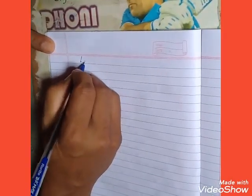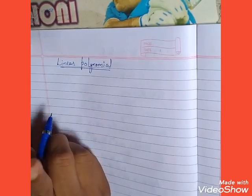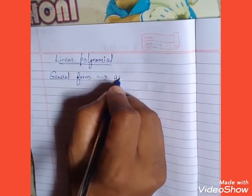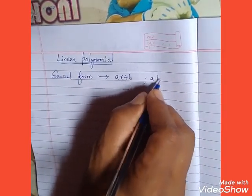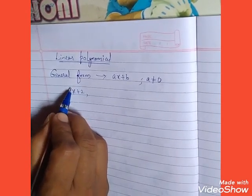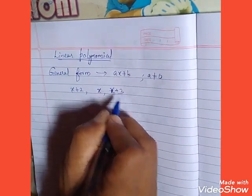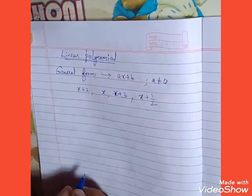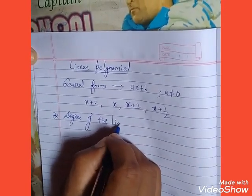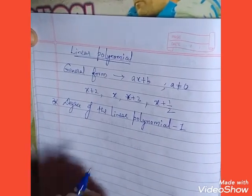First is the linear polynomial. Any linear polynomial will have a degree of 1. The general form of a linear polynomial is ax + b, where a should not be equal to zero. Examples: x+2, x, and x+3 are all linear polynomials. x + ½ is also a linear polynomial. The degree of the linear polynomial is always 1.